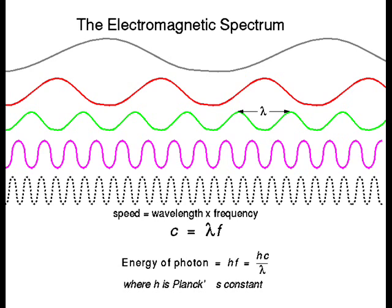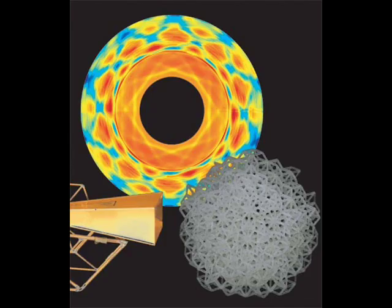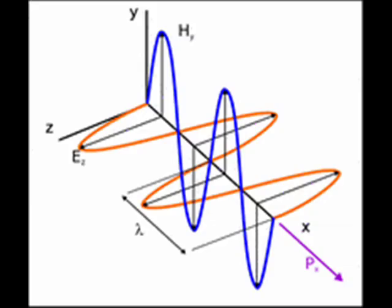Different frequencies of light interact with matter in many different ways, depending on the atomic structure of the material and its electromagnetic properties, also depending on the frequency of the light that's interacting with it.